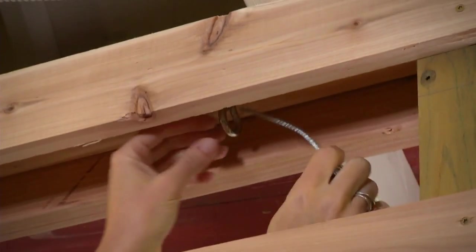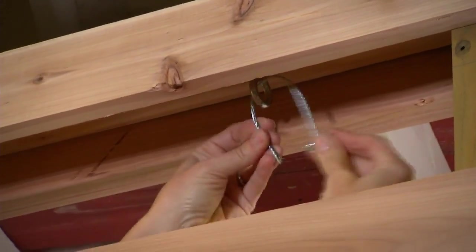The wire ropes that hold the planters are secured at the bottom of the bench and at the top. So start at the top and thread the wires through the eye screws and secure them with these wire clips.